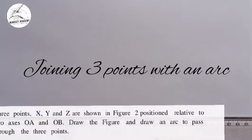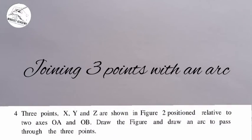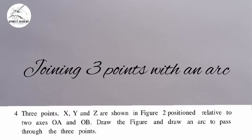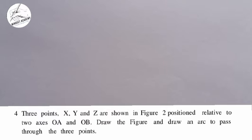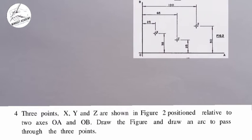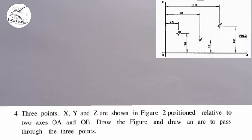In this tutorial we are told that three points X, Y and Z are shown in the figure that is located at the top right corner of the screen, positioned relative to two axes OA and OB. Draw the figure and draw an arc to pass through the three points.